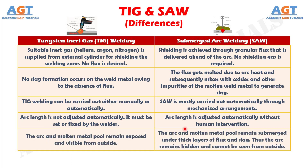Number 11: in TIG welding, the arc and molten metal pool remain exposed and visible from outside. In submerged arc welding, the arc remains hidden and cannot be seen from outside.